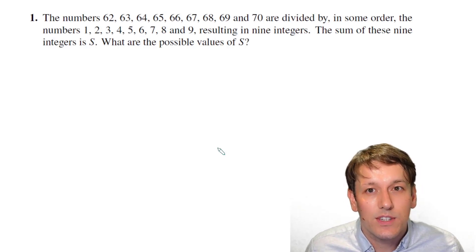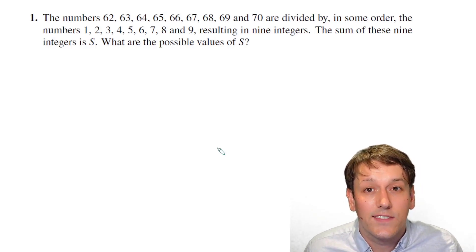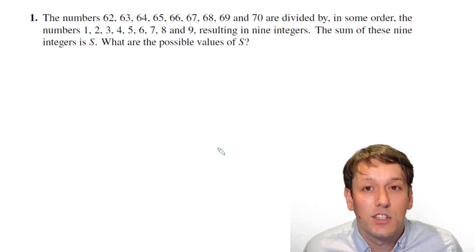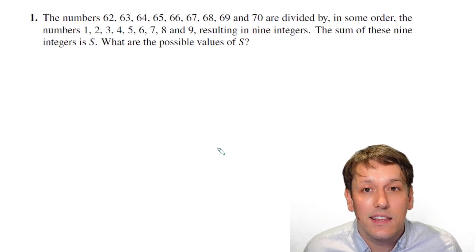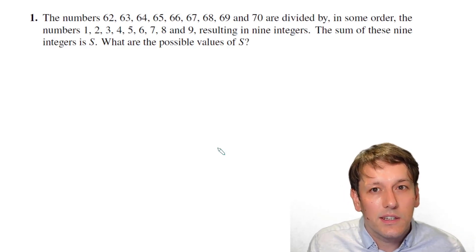And it says the sum of the 9 integers is S. What are the possible values of S? And again, this is where Olympiad questions can be harder, because we can show working, there doesn't have to be just one answer. It can lead to multiple answers sometimes, and we'd have to find them all, or at least if there is only one, show that there aren't any others as well. So let's think about this.